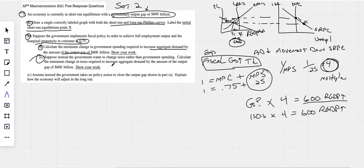Suppose instead the government wants to change taxes rather than government spending. Calculate the minimum change in taxes required to increase aggregate demand by the amount. Show your work. Now, simple thing here is that your tax, this is your government spending multiplier right there. Government spending multiplier is four. But we also have what we call a tax multiplier. The simplest thing for you to know is that your tax multiplier is always one less than your government spending multiplier. So the simple thing is to understand that your tax multiplier is three.